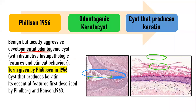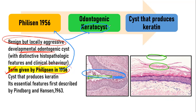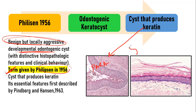It is benign, but locally aggressive. The terminology was given by Philipsen in 1956. The question is, why did Philipsen call it the odontogenic keratocyst? This is because it produces a large amount of keratin. This keratin can be of various types, which we'll study when we talk about the histopathology.